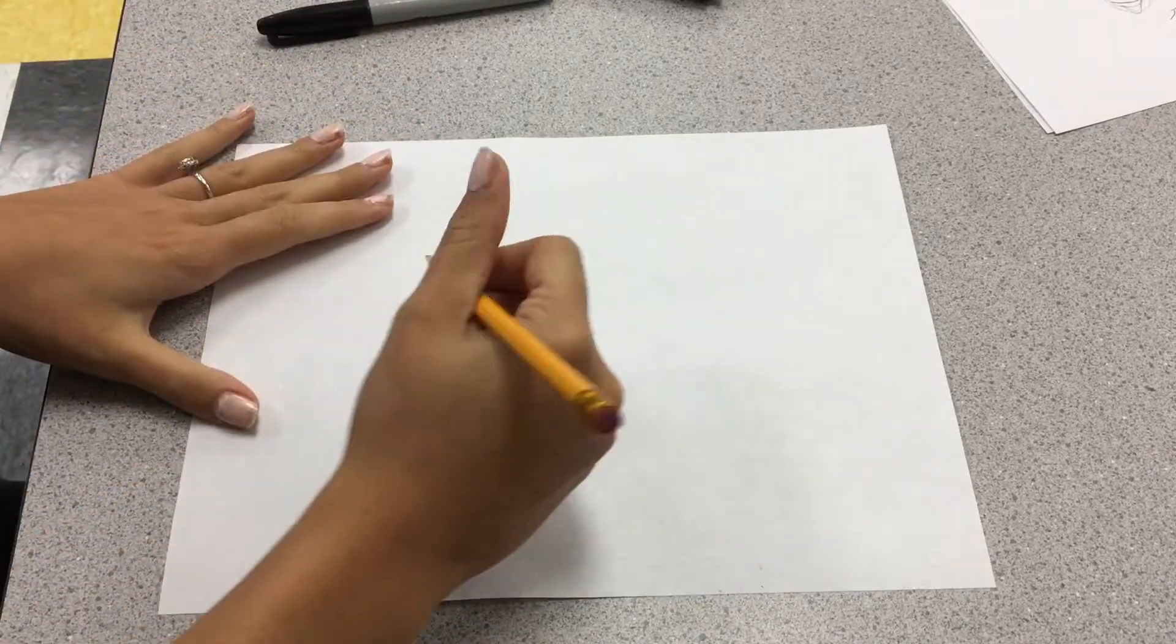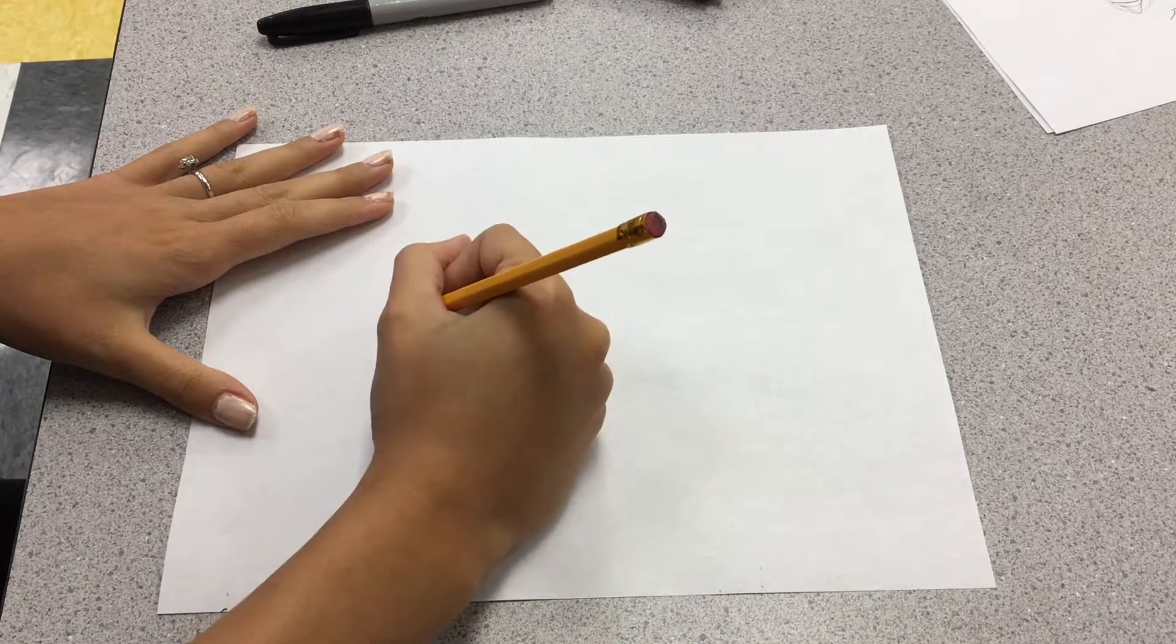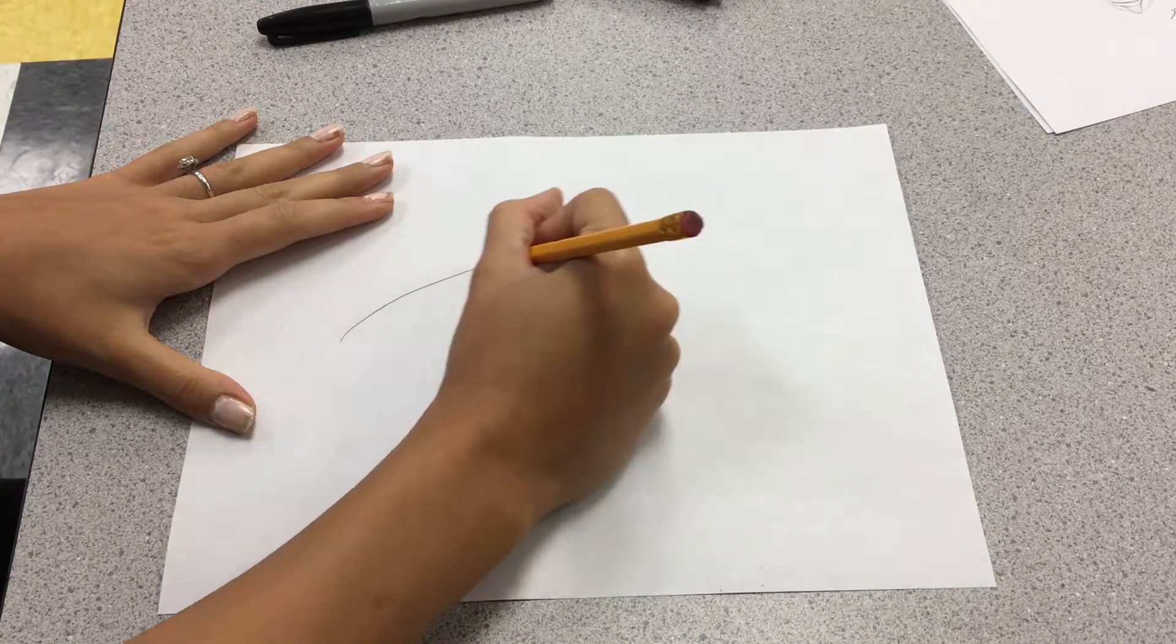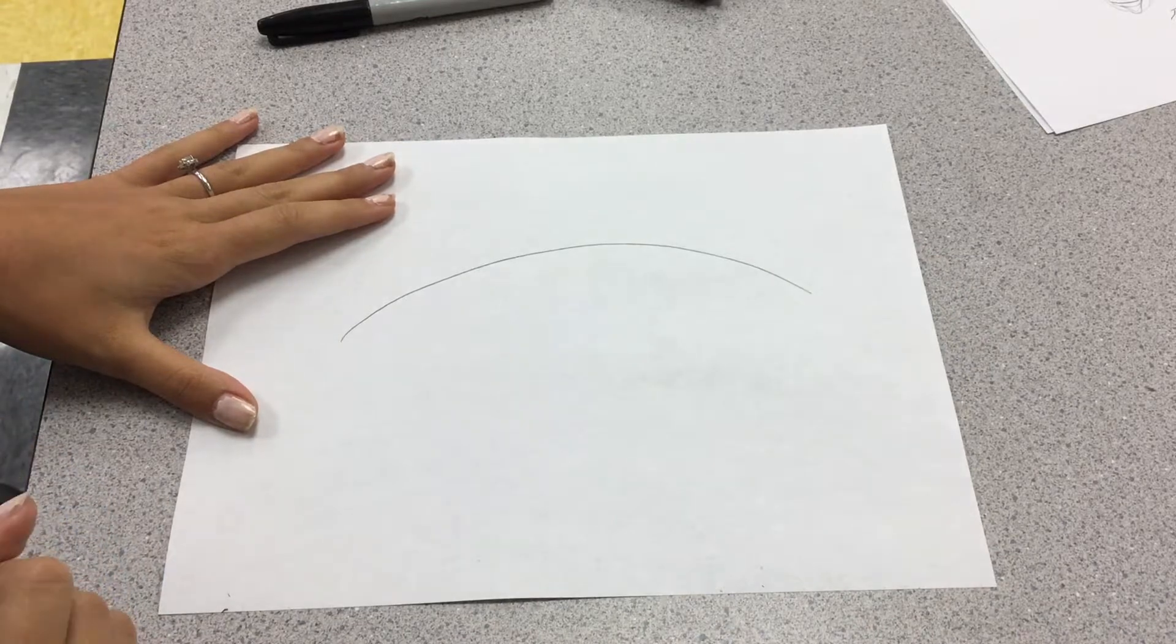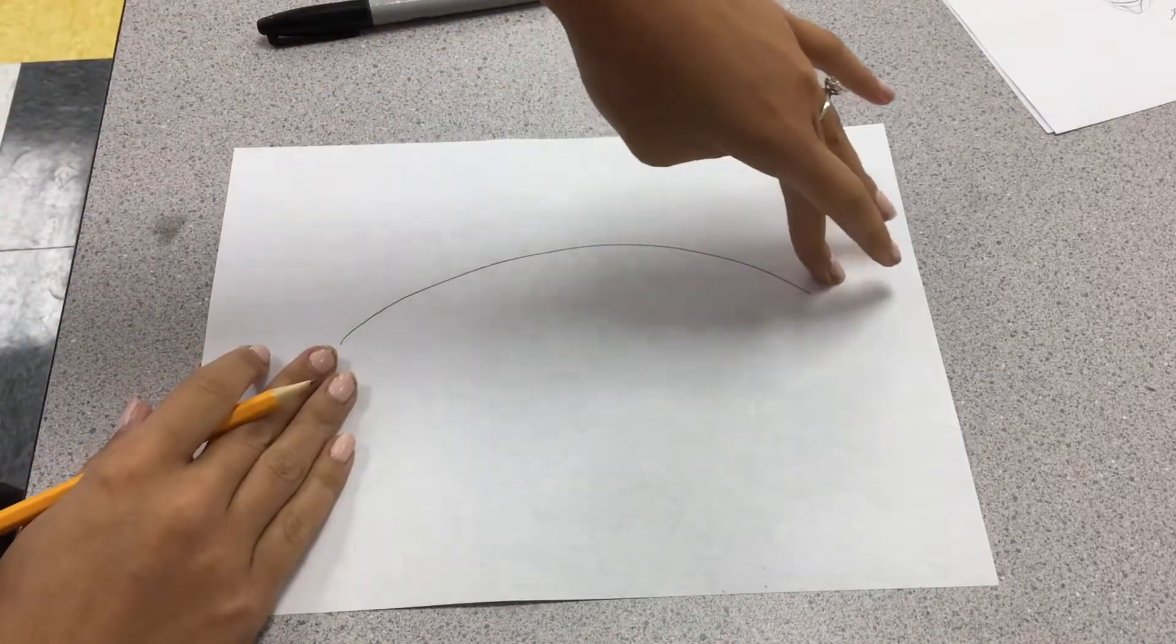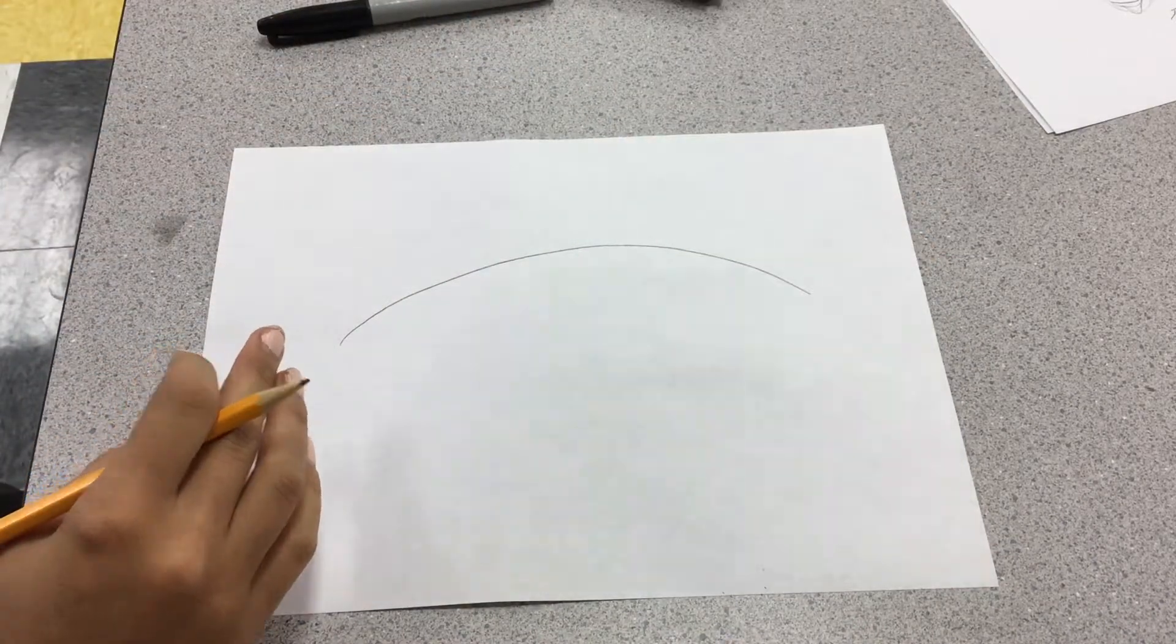First off, I'm going to do this in pencil, but hopefully you guys can see it. So you're going to make a curved shape kind of towards the middle of your paper, like that. And you want it to be nice and big so that your eyeball is taking up most of the page.